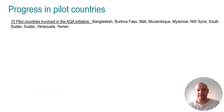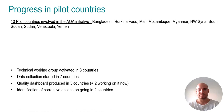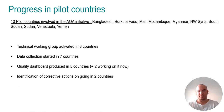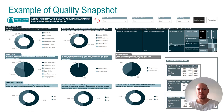Below you have the link to access these two key documents. Currently, the AQA initiative is ongoing in 10 pilot countries: Bangladesh, Burkina Faso, Mali, Mozambique, Myanmar, Northwest Syria, South Sudan, Venezuela, and Yemen. Technical working groups have been activated in eight countries. Data collection has started in seven countries. Three countries have already produced a quality dashboard, two countries are working on it now, and two countries are currently working on the identification of corrective actions to improve their WASH response.